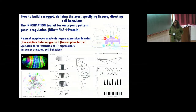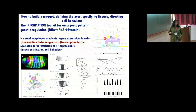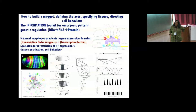Vijay already spoke about the fact that the fruit fly embryo shows features of segmentation, and we both showed you movies where you can see this segmentation morphologically. This segmentation is also manifest in patterns of gene expression showing a stripy character — a feature of the anterior-posterior axis. These subdivisions happen along the anterior-posterior axis.